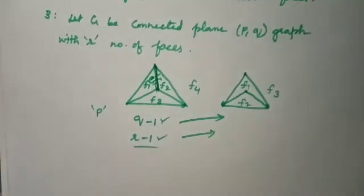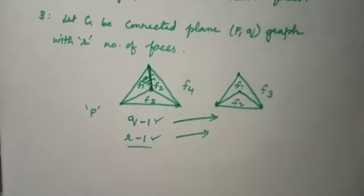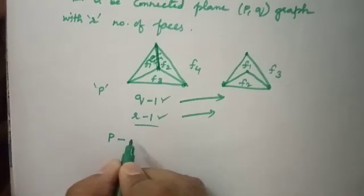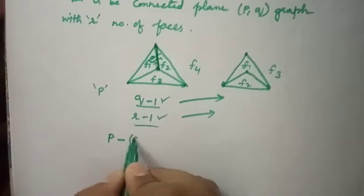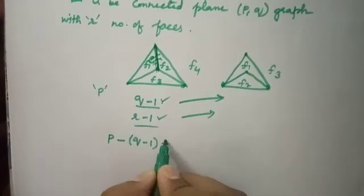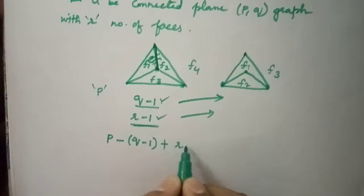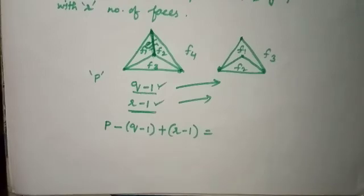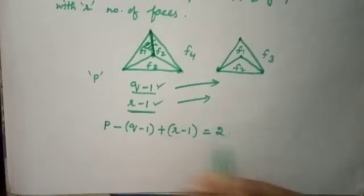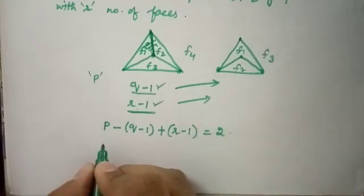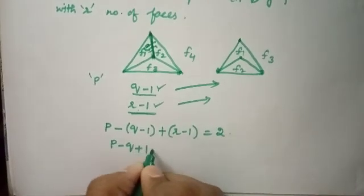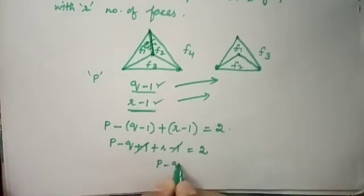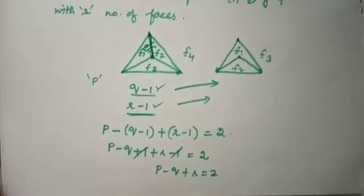R minus 1 faces is less than R faces, so we can apply the induction hypothesis here. By the induction hypothesis, the Euler's formula holds: P minus (Q minus 1) plus (R minus 1) equals 2. Simplifying, you get P minus Q plus 1 plus R minus 1 equals 2, which gives P minus Q plus R equals 2.